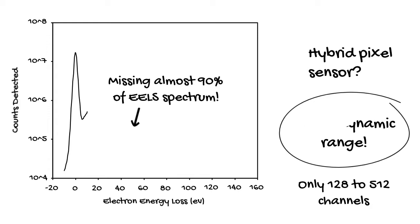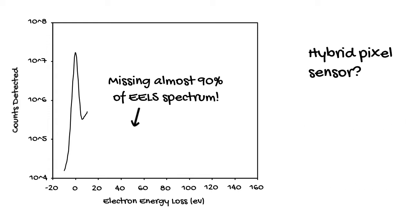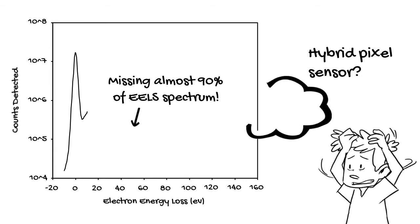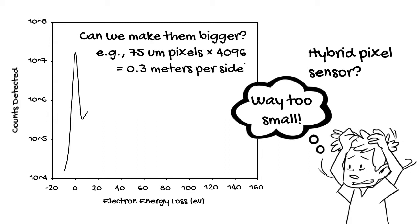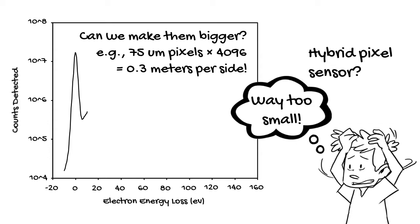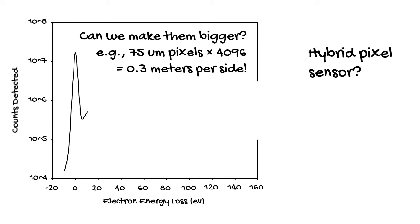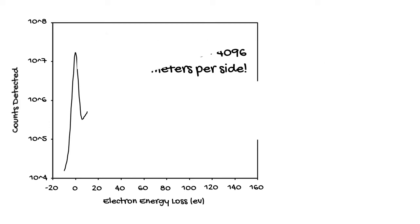In fact, with so few channels, the dynamic range isn't even necessary, because you simply don't have enough channels to capture a spectrum wide enough to cover a large intensity range. Although there are a few recent hybrid pixel detectors that are larger, it remains infeasible to manufacture a hybrid detector with 4K channels, let alone actually fitting something that large on the end of a spectrometer. So while there are good applications for hybrid pixel detectors, EELS is clearly not one of them. These detectors are simply too small to be useful.